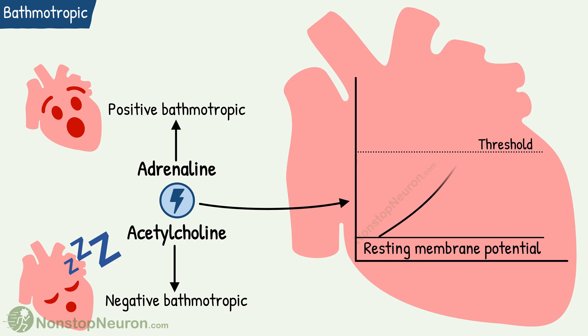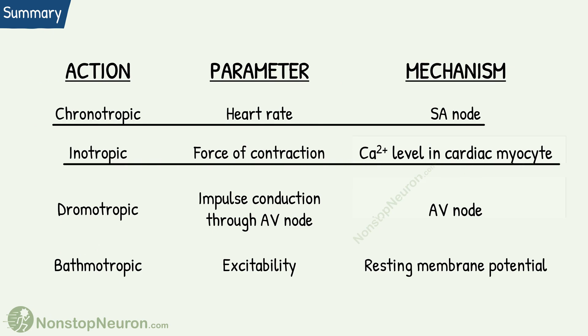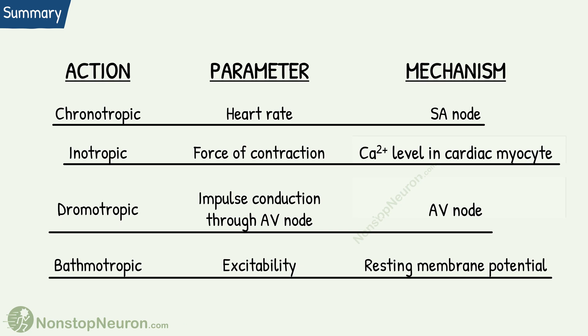Now let's have a quick summary. Chronotropic action means a change in heart rate, produced by action on the SA node. Inotropic action means a change in contractility, produced by changes in calcium level inside the cardiac muscle. Dromotropic action means a change in impulse conduction through the AV node, produced by action on the AV node. Finally, bathomotropic action means a change in excitability, produced by altering the resting membrane potential.